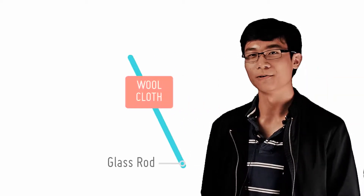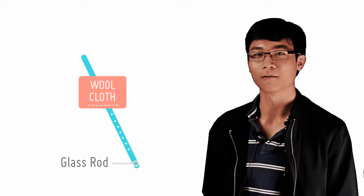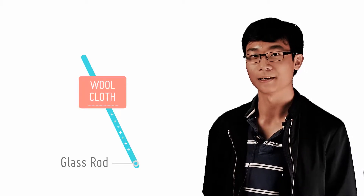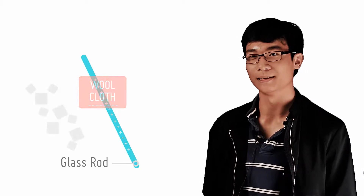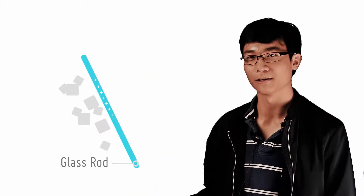Let's discuss how scientists back then discovered the concept of charge. They noticed that when you rub some materials against a different material, such as a glass rod with a wool cloth, these objects will have a charge. Back then they didn't know what was this thing called charge, but they did know that these rubbed objects could attract small paper bits, attract or repel other rubbed objects, and when brought close to the face or the arm, cause a sensation like that of encountering a cobweb.